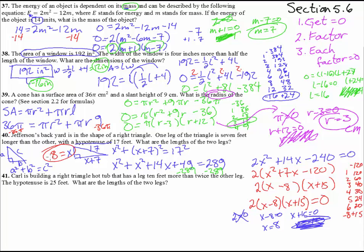So we get X equals 8. So that's one length of one leg. And then 8 plus 7 is 15. Not because that was a 15, but because this is X plus 7. And there we have it. One length is 8, I guess we should put feet, and 15 feet are the two legs of the triangle. Oh, good. Now we do number 41. Number 41. Carl is building a right triangle hot tub. Oh, look. We're going to use the same thing again.